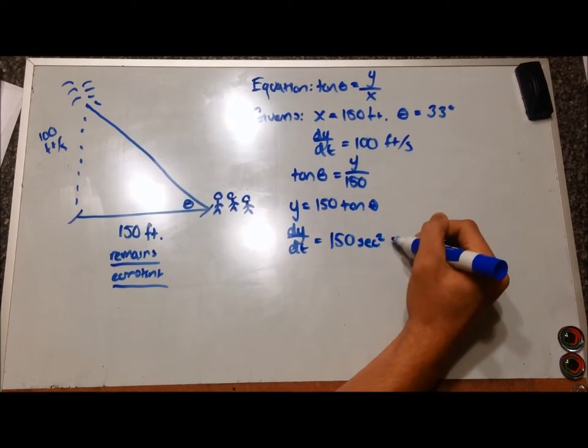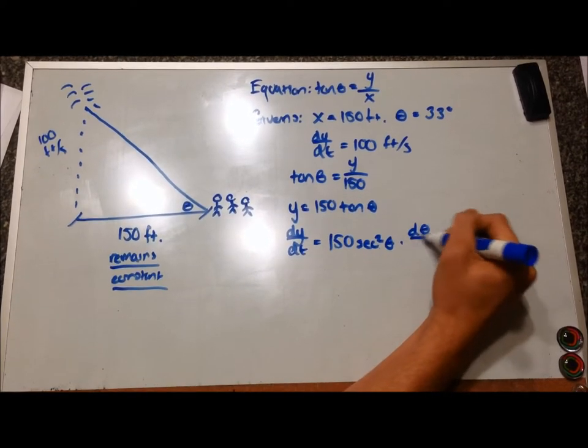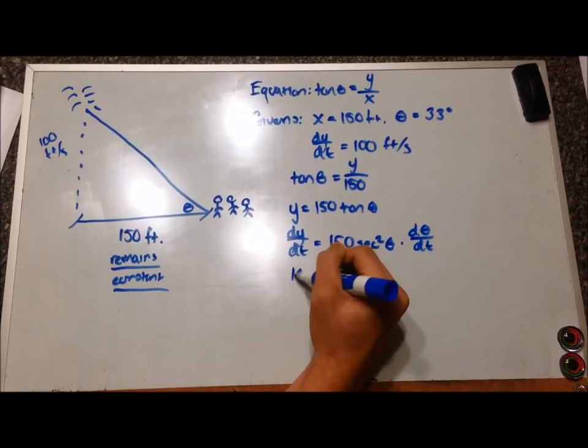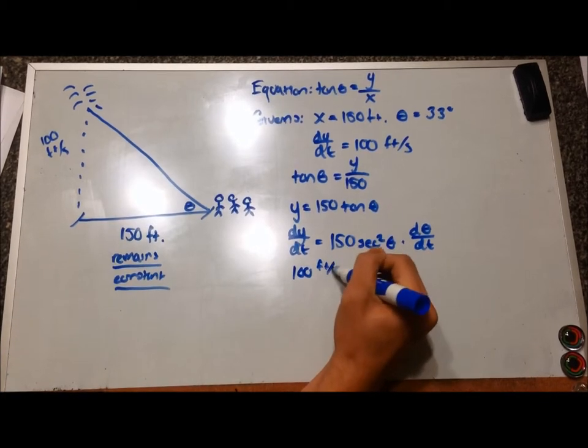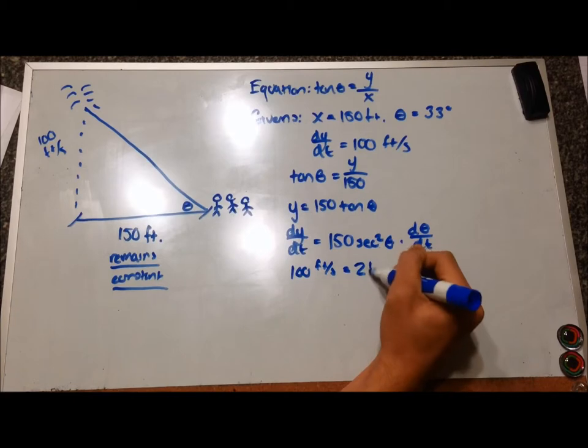Next, derive with respect to time. Make sure you don't use y prime because that's not what we mean here. dy/dt equals 150 secant squared theta times d theta/dt should be our related rates equation.